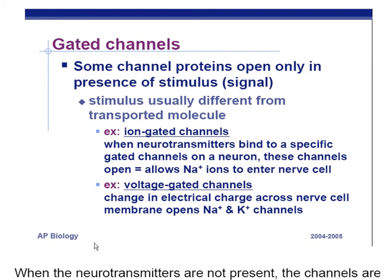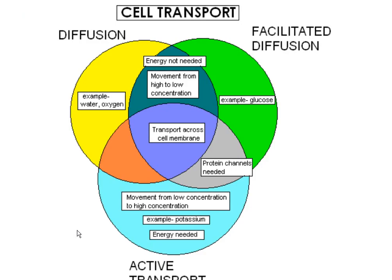Gated channels only open up with a signal. We'll talk more about that with the nervous system. We have voltage-gated channels that only open up in the presence of voltage, or gates that only open up in the presence of charges. Here's a Venn diagram summarizing all this: a triple Venn with diffusion, facilitated diffusion, and where they overlap — what they share in common — is transport across the cell membrane.